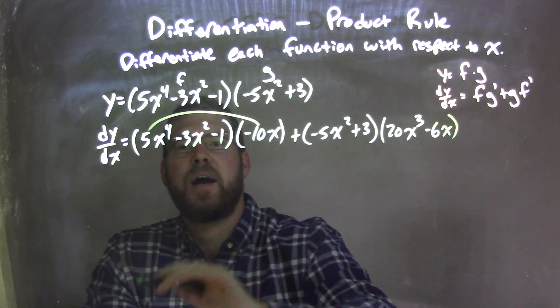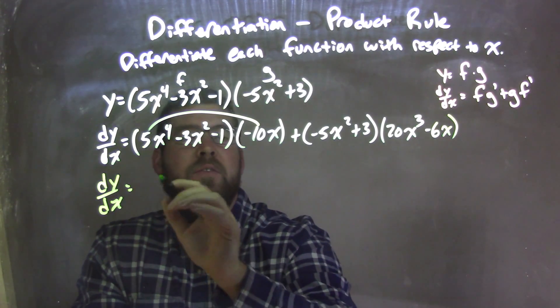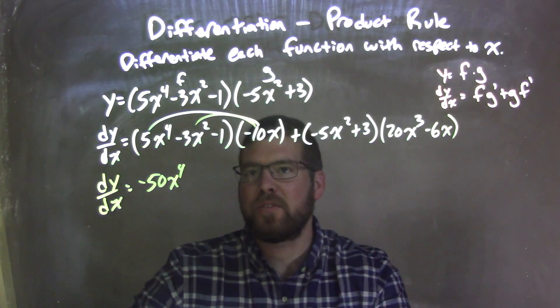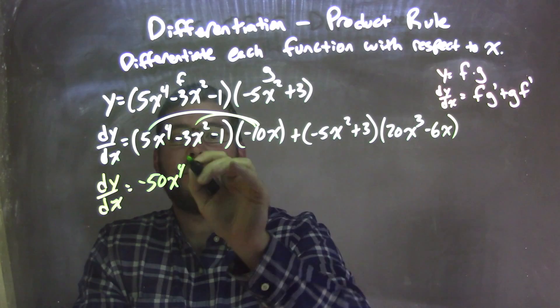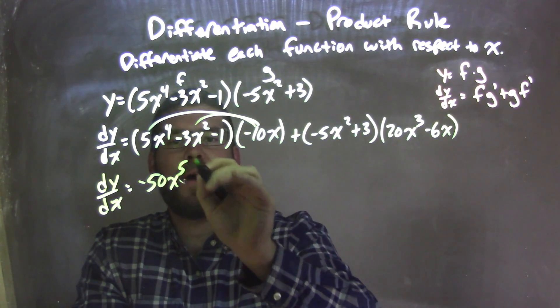Negative 10x times 5x to the 4th is negative 50x to the 5th. I've got to have myself. We add the exponents, it's the 5th power.